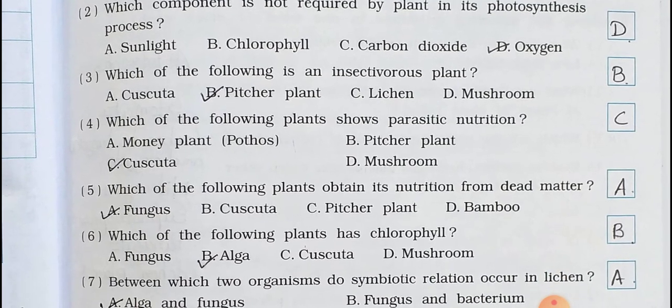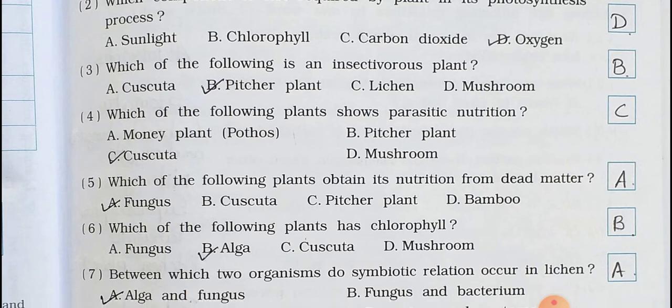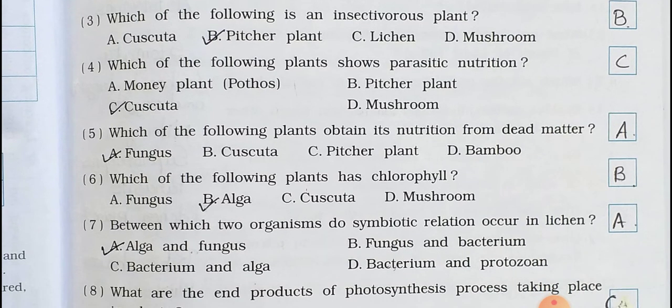Number 4. Which of the following plants shows parasitic nutrition? Parasitic nutrition means it depends on other plants. A. Money plant. B. Pitcher plant. C. Cascuta. D. Mushroom. Answer is Option C: Cascuta.